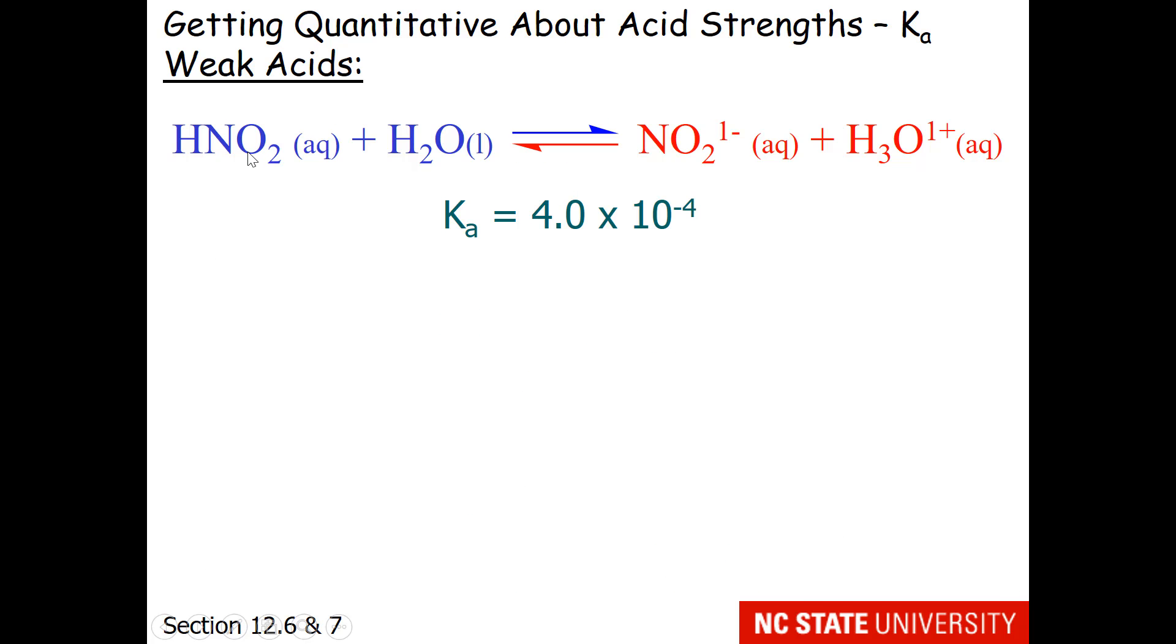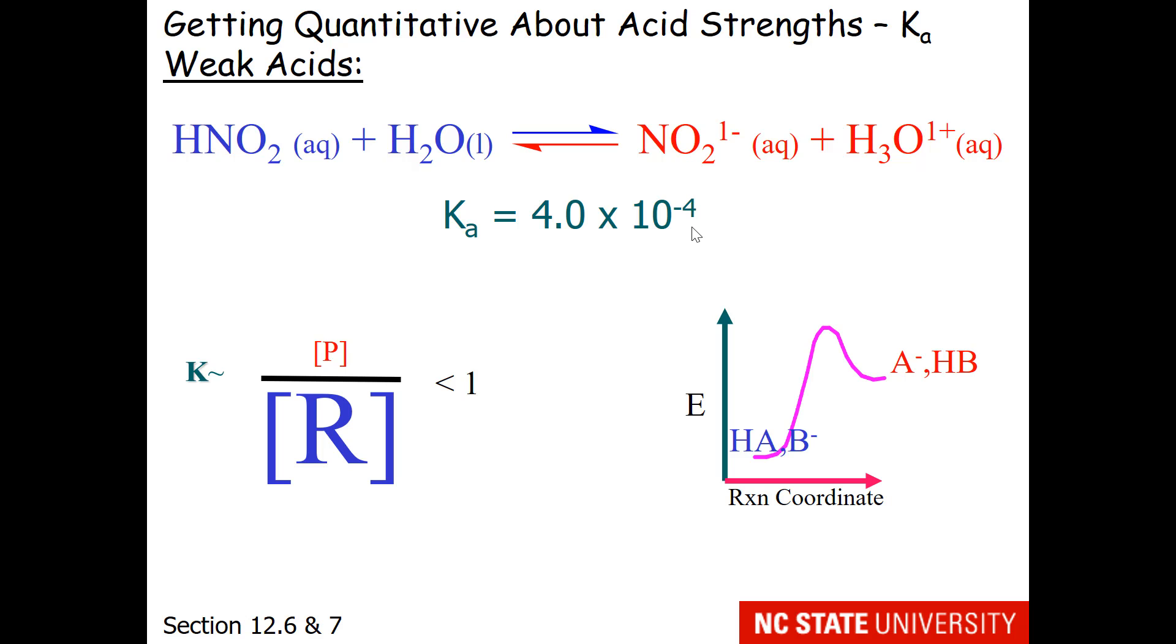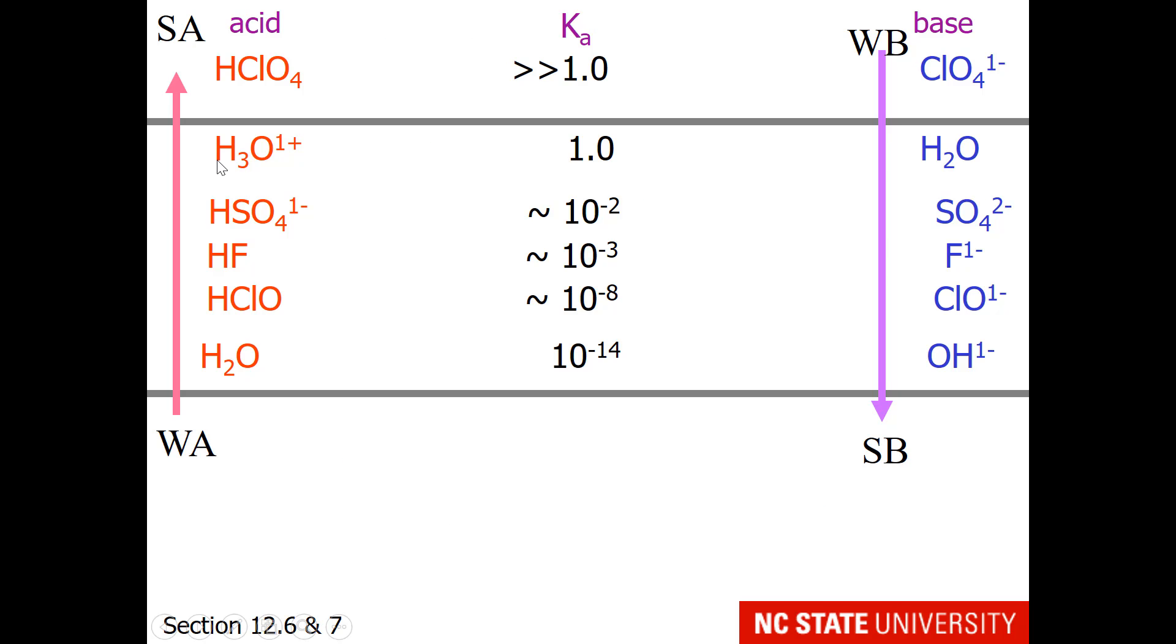Now let's look at some weak acids. We'll start with nitrous acid. If you look at the table, nitrous acid has a value for Ka of 4 times 10 to the minus 4. So this is a reaction that doesn't go very far to the right side. In fact, it stays at mostly reactant. So it's a non-extensive reaction. So only a little bit of product is formed. Where are the weak acids on our acid base table? They exist between hydronium and water.